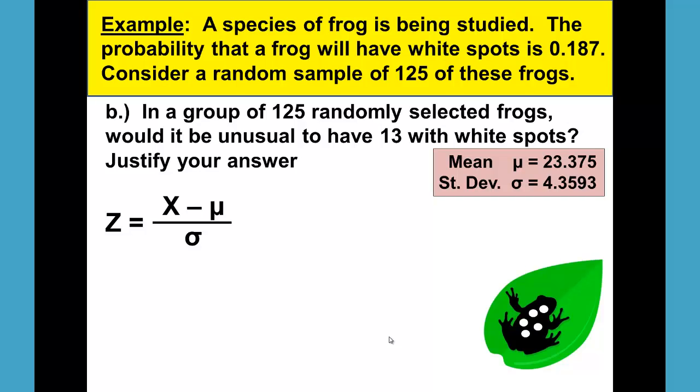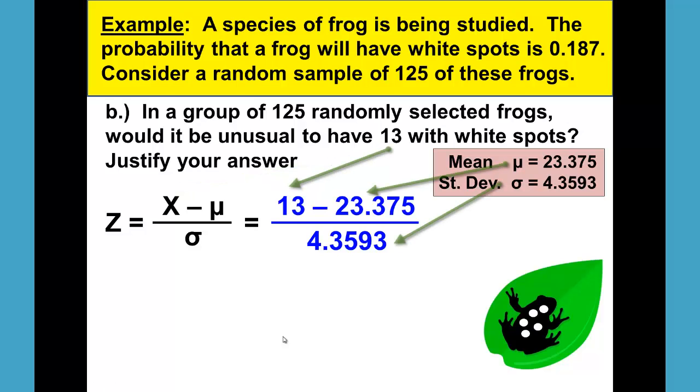X minus the mean divided by the standard deviation. X would be the 13 with white spots. So that would be 13 minus 23.375 divided by 4.3593. Please remember to follow your order of operations and do the top of your fraction before dividing. That gives us negative 2.36.